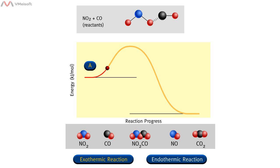As the two molecules approach each other, an attractive force begins to form between one of the oxygens of nitrogen dioxide and the carbon of carbon monoxide, which is indicated by the dashed line. The bond between the nitrogen and oxygen of NO2 begins to weaken, and the bond length increases.